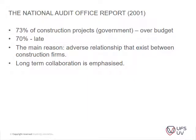The National Audit Report found that 73% of government construction projects in the UK were over budget and 70% were late. The main reason cited was adverse relationships between construction firms. Long-term collaboration was heavily emphasized after this report. These percentages are fairly close to what we see in South Africa as well.